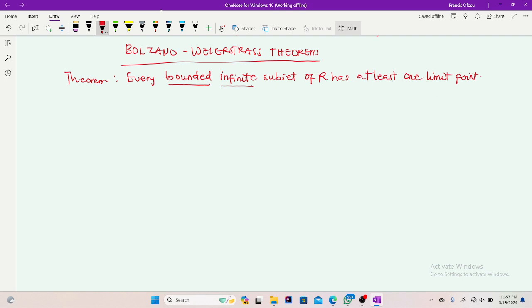So the term is being highlighted on bounded and not infinite, then on R, real numbers. So meaning that if any given subset of real numbers is bounded and also is infinite, right? So meaning that it's a set, a given set, it's bounded and it's infinite.